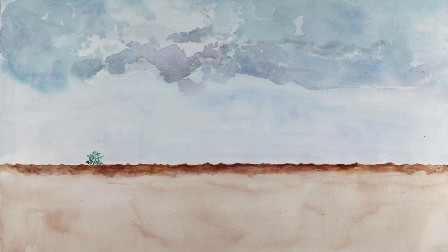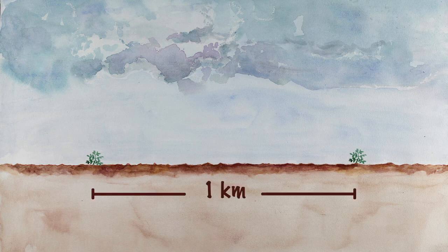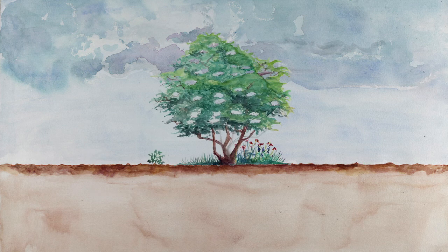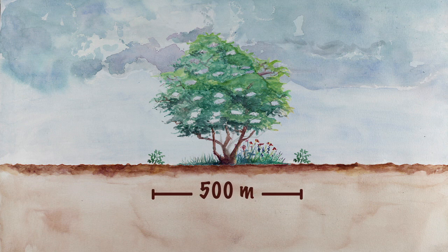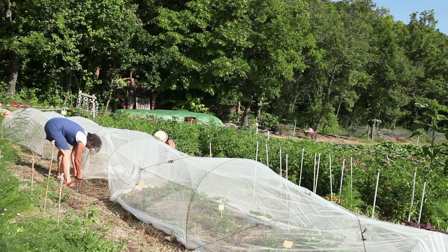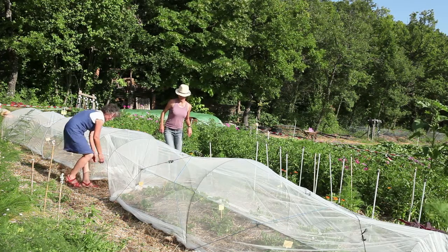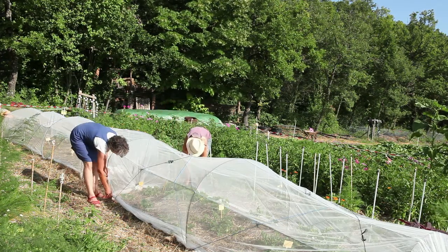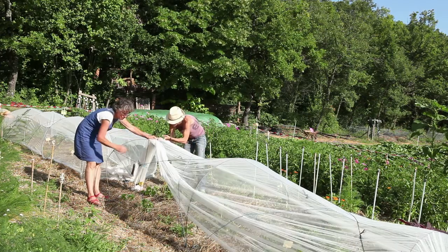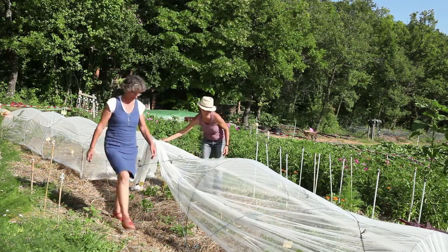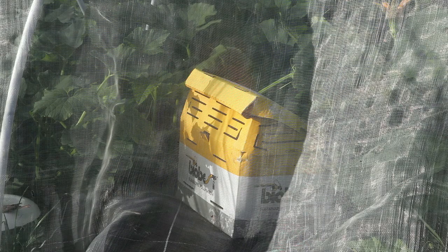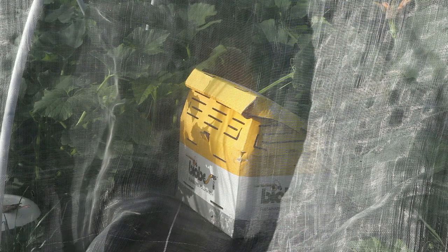To avoid cross-pollination, two different varieties of celery should be grown about one kilometer apart. This distance can be reduced to 500 meters if a natural barrier, such as a hedge, exists between the varieties. The varieties can also be isolated by alternately opening and closing insect nets, or by placing small hives with insects inside a closed insect net.